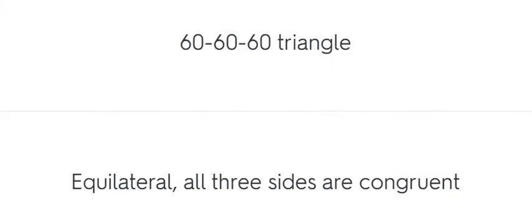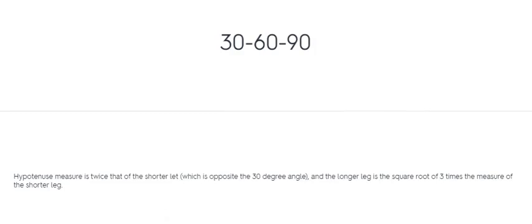60-60-60 triangle. Equilateral. All three sides are congruent. 30-60-90 triangle. Hypotenuse measure is twice that of the shorter leg, and the longer leg is the square root of 3 times the measure of the shorter leg.